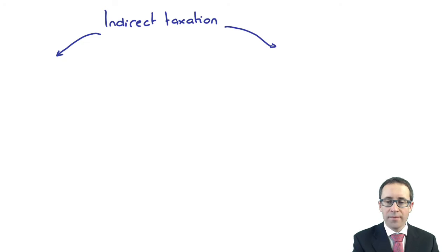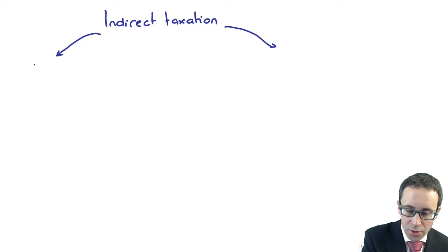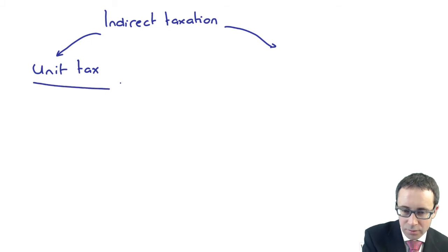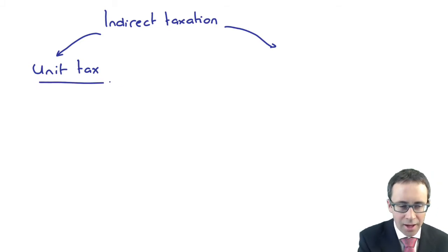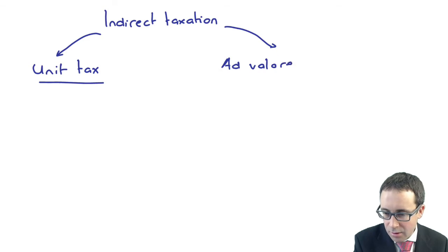Indirect taxation works essentially in two ways. You can have the indirect tax based on a unit tax, and also indirect tax based on what's referred to as an ad valorem method — a little bit Latin there.